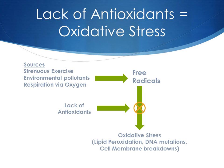In essence, the lack of antioxidants equals lots of oxidative stress. Strenuous exercise, environmental pollutants, and just respiration via oxygen — our normal breathing and living — causes free radicals to form inside our bodies. Because we have a lack of antioxidants, because the food we eat is not fresh, we eat a lot of processed foods, we don't get a lot of antioxidants from our daily living, there are pollutants around, and there are electromagnetic frequencies that damage our cells, so our cells can't produce many antioxidants. Because we can't block off the free radicals, there's increased oxidative stress, which leads to lipid peroxidation, DNA mutations, and cell membrane breakdowns.